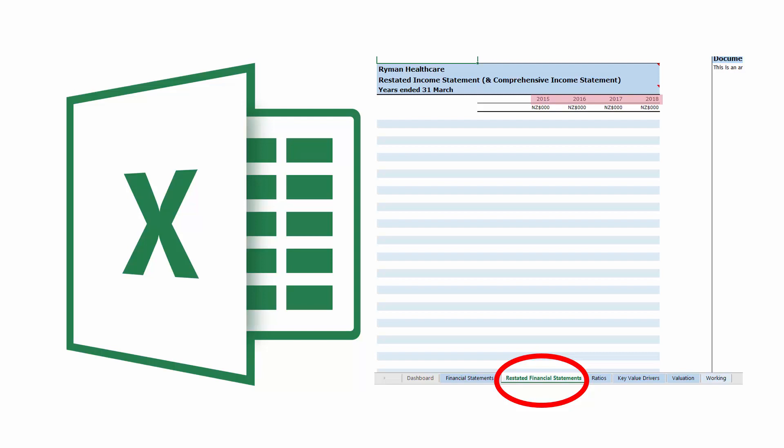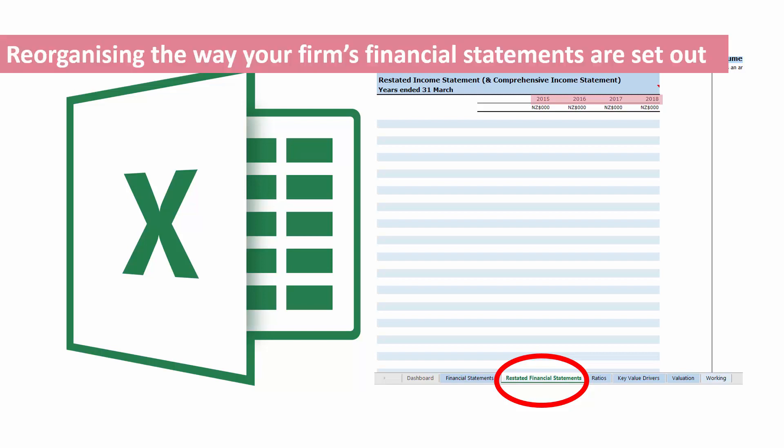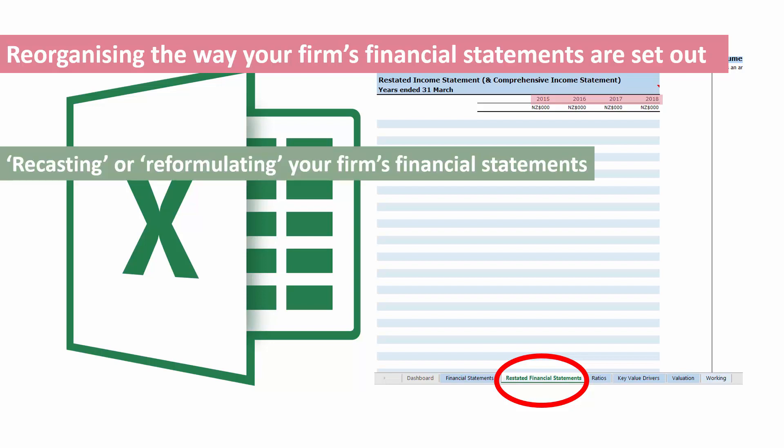Restating your firm's financial statements simply involves reorganizing the way your firm's financial statements are set out. This can also be called recasting or reformulating your firm's financial statements. Our task involves moving around different items, and to do this we will need to understand what each item is.